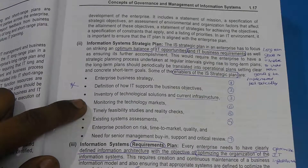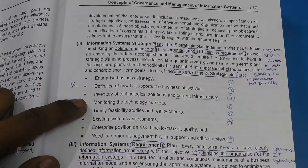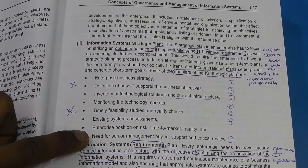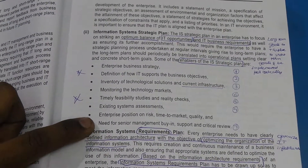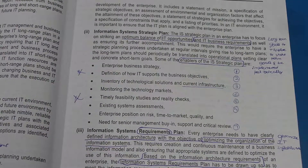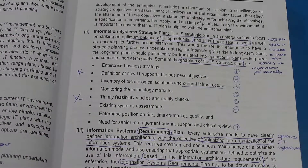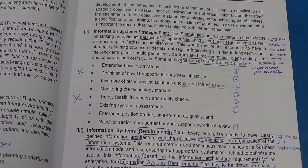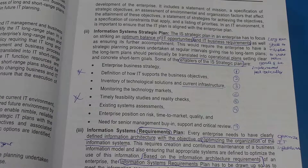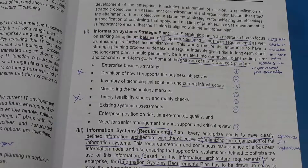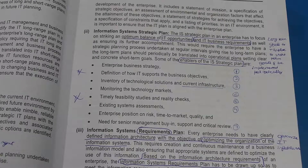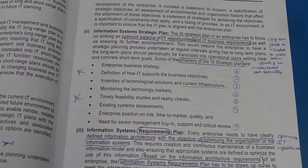Point 6 is Technology Markets — to see whether anything interesting or required by the enterprise is upcoming in the market. Point 7 is the Need for Senior Management Buy-in, Support, and Critical Review. If something has been identified as needing to be purchased regarding IT assets, senior management will have to support it so it can be bought and implemented. These are the enablers for the Information Systems Strategic Plan — that is, how IT assets support the enterprise objective.